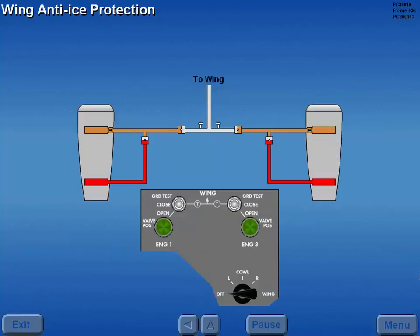Wing anti-ice protection is provided by 6th and 13th stage bleed air from the number 1 and number 3 engines. Either engine is sufficient to supply wing anti-ice protection. Wing anti-ice is controlled by the wing anti-ice switches.